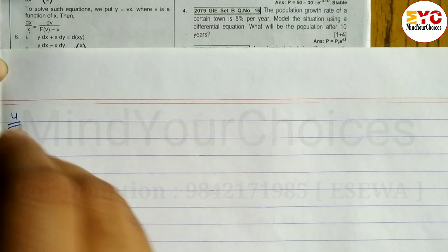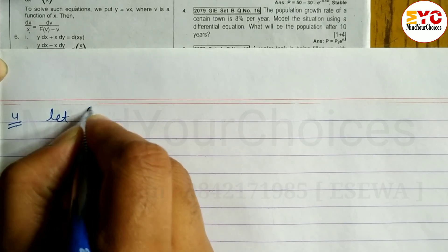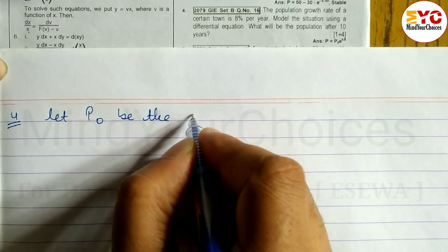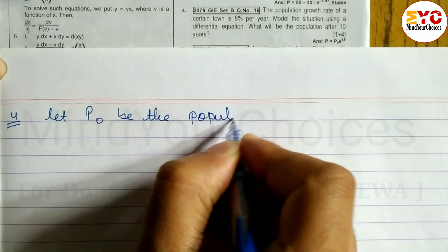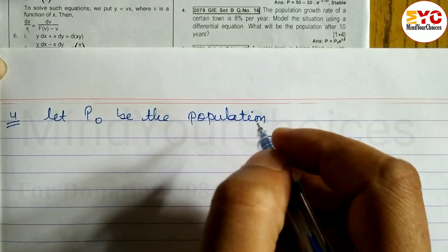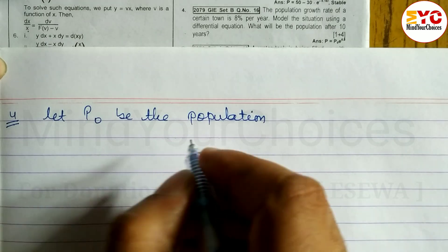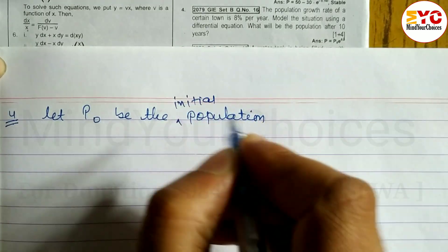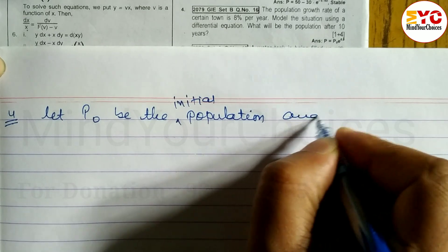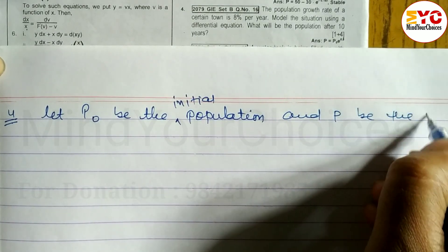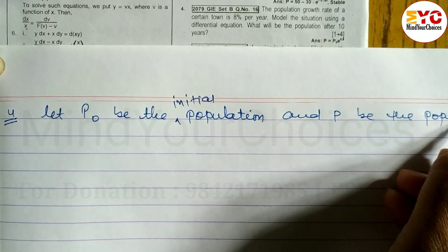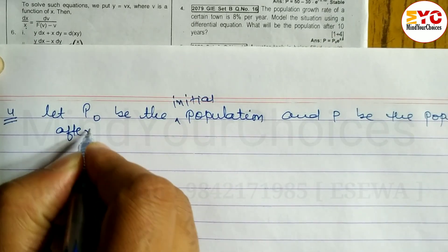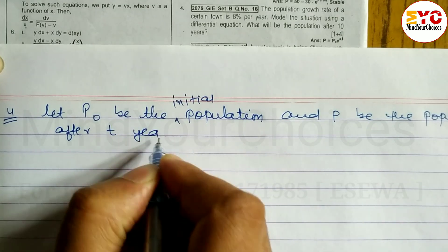Let p0 be the initial population, and let p be the population after t years.